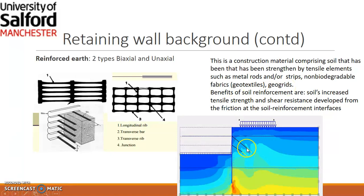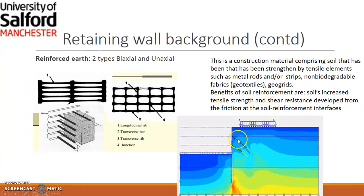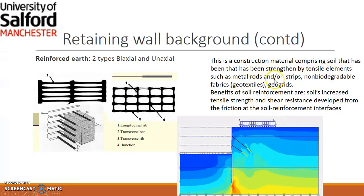Within Plaxis, if you want to add any kind of reinforcement earth, you can use a geogrid, shown here as the yellow line. The blue line is the anchor. In this example we are using an anchor to support our wall during the excavation. The reinforced earth is a construction material comprising soil that has been strengthened by tensile elements such as metal holds or strips — it is a kind of strengthened material for the soil.